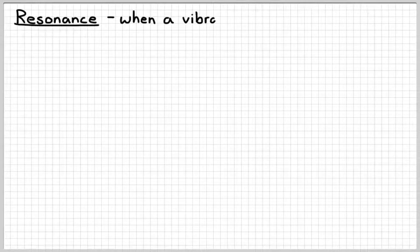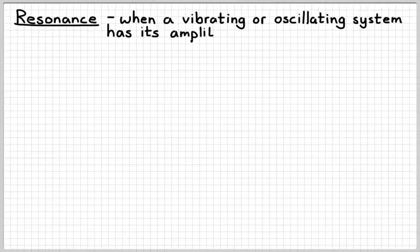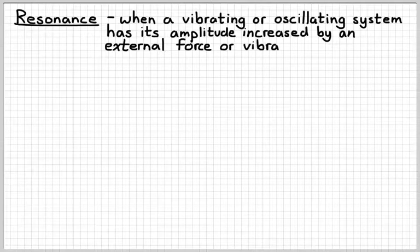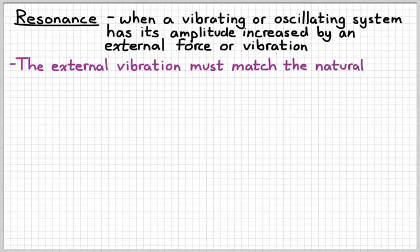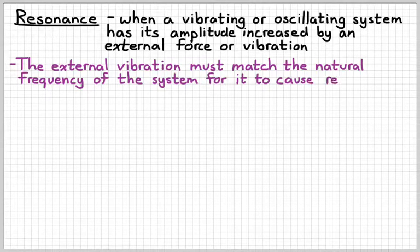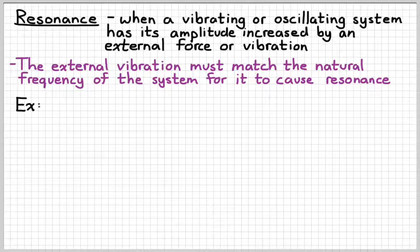Standing waves are an example of resonance. Resonance occurs when a vibrating or oscillating system has its amplitude increased by an external force or vibration — one thing causes another thing to vibrate. For resonance to occur, the external vibration has to match the natural frequency of the system.